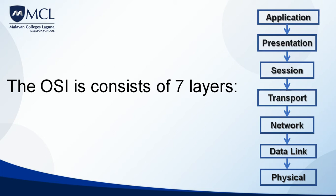The seven layers are: the application layer, the presentation layer, the session layer, the transport layer, the network layer, the data link layer, and the physical layer. We'll go through each of these layers one by one and discuss the protocols underlying each layer, as well as the function of each layer.